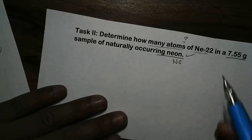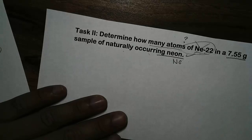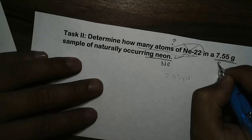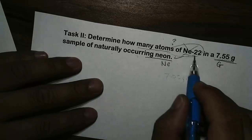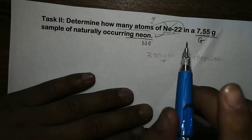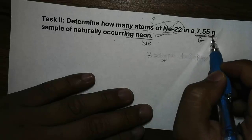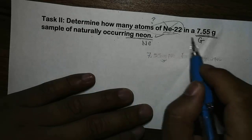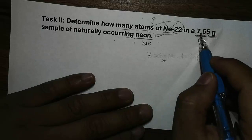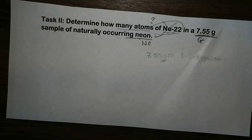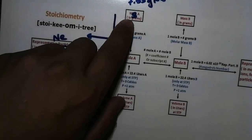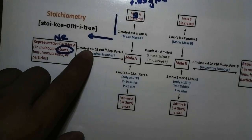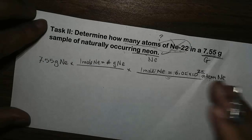For now, we can consider the neon-22 distinction irrelevant and focus on neon itself. Our given is 7.55 grams of neon, and our intermediate unknown is atoms of neon — not neon-22 yet. To solve, we first ignore neon-22 and focus on our given. We take the 7.55 grams of neon and convert to atoms of neon using conversion factors, multiplying by the appropriate factors to interpret and solve for atoms of neon.